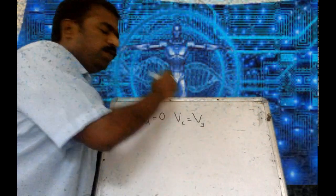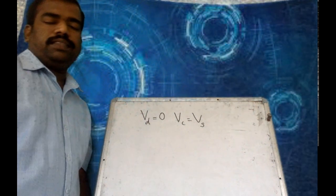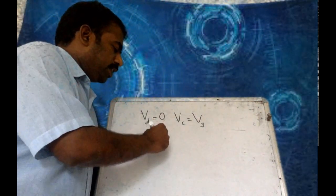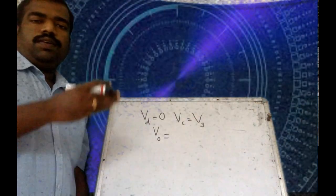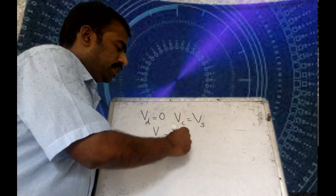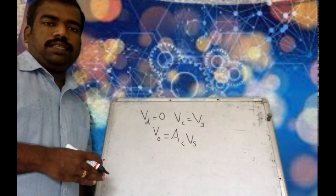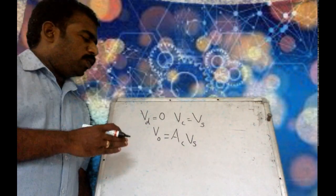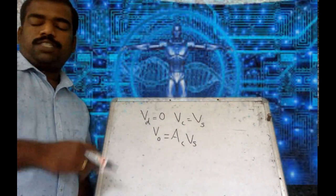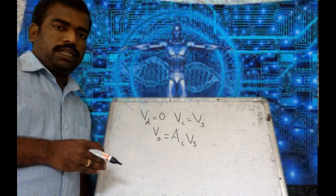What is Vc? It is Vs. Vc equals Vs when both signals are the same. So the output voltage is common mode gain times the signal voltage. This represents the common mode operation of the operational amplifier.